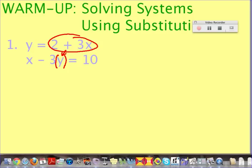So now we're going to make a new equation with that substitution in it. So we're going to take the x minus 3 times, now in parenthesis, instead of y, we're going to have 2 plus 3x, because that's what y was equal to. And that comes out to 10. So we're essentially writing that second equation just with that 2 plus 3x replacing the y value.